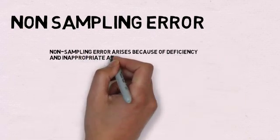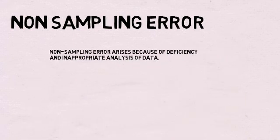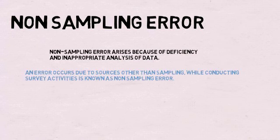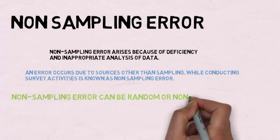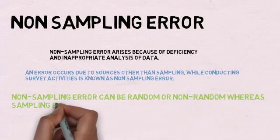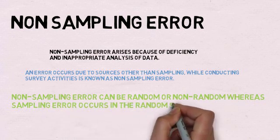of data. So in simple, an error occurs due to sources other than sampling while conducting survey activities is known as non-sampling errors. Non-sampling error can be random or non-random, whereas a sampling error occurs in random samples only.